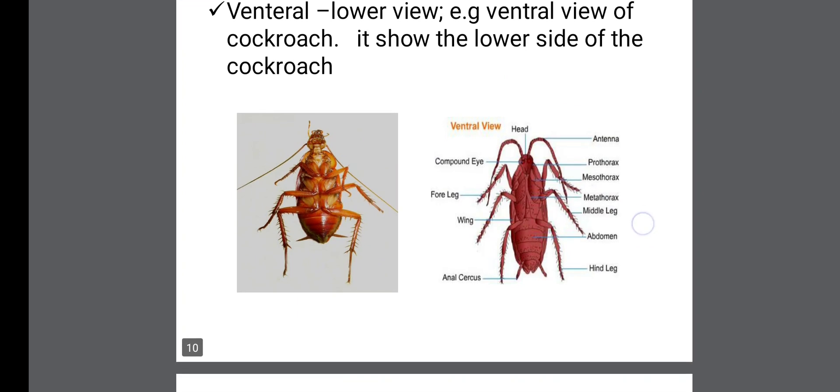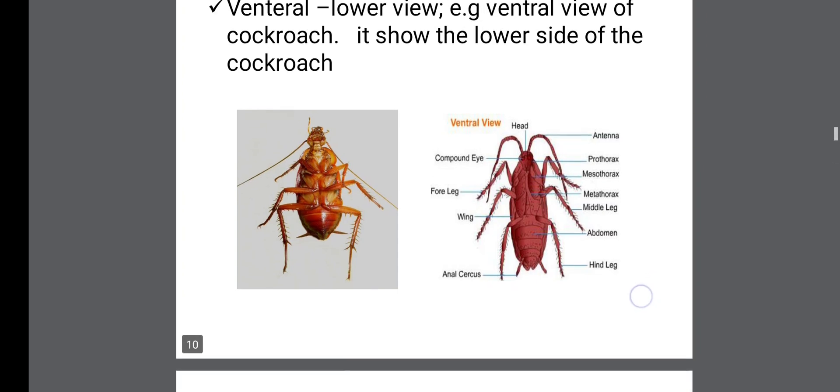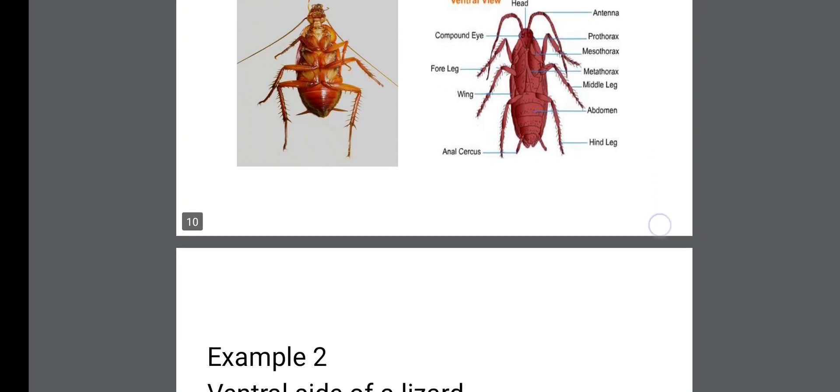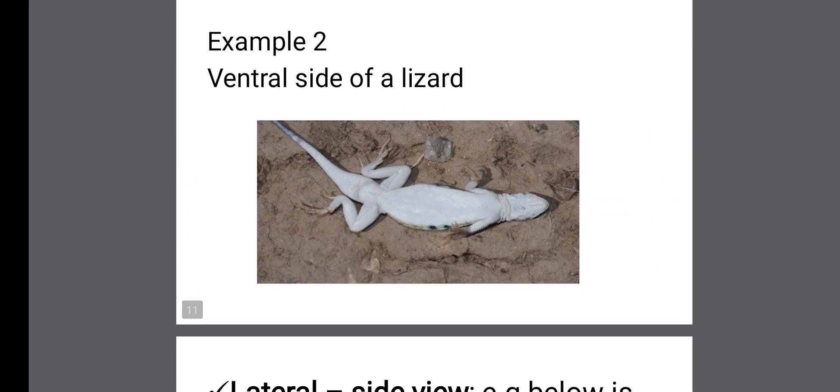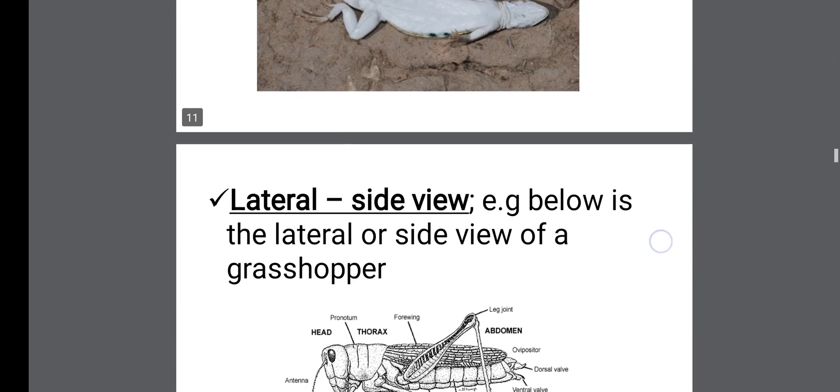So you can use the forceps to actually turn whatever specimen it is ventral view. If peradventure, you are asked to draw the ventral view of that specimen, the ventral view shows the lower side of a specimen. This is another example I have here: the ventral view of a lizard.